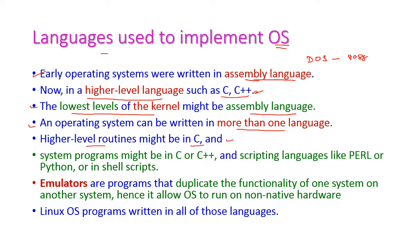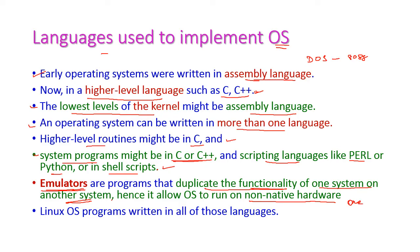Higher-level routines are typically written in C, while lower-level systems are designed in assembly language. System programs are designed in C or C++ along with scripting languages like Perl, Python, or Shell script. Apart from this, emulators are also used in operating systems to duplicate the functionalities of one system on another system. Hence the operating system can run on non-native hardware, meaning an OS designed for one system can be used on other hardware as well.